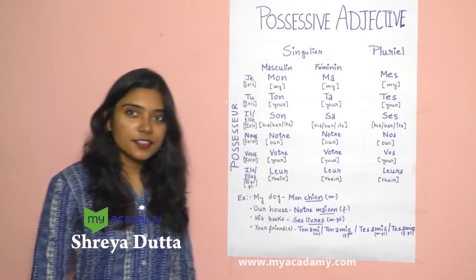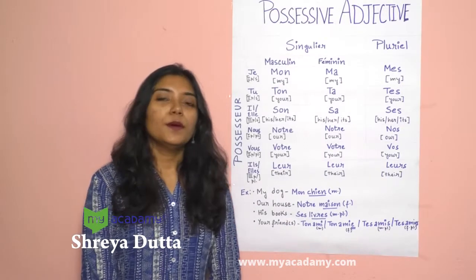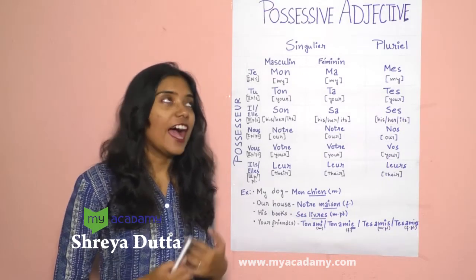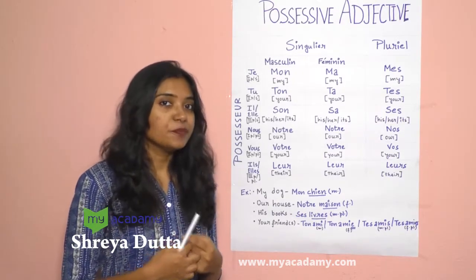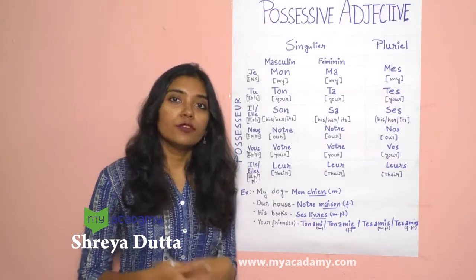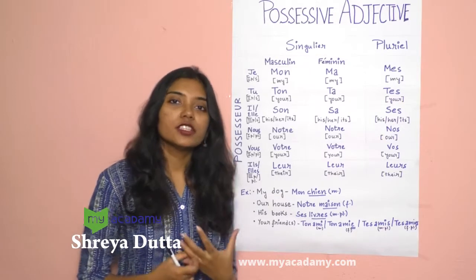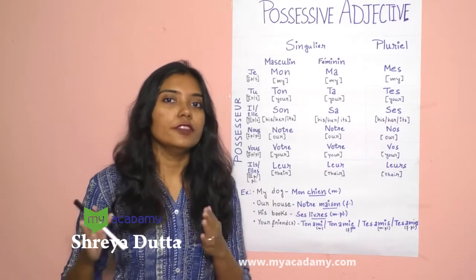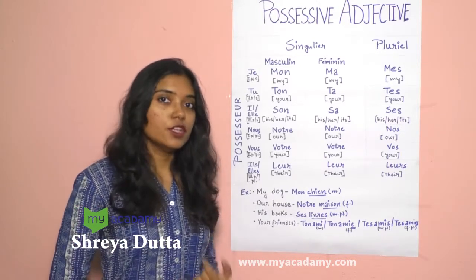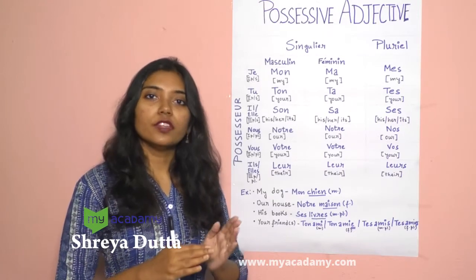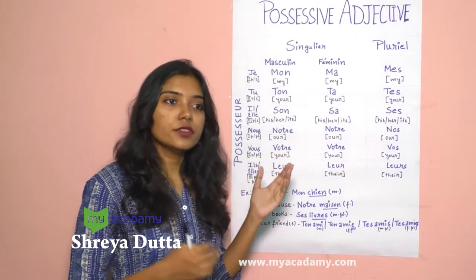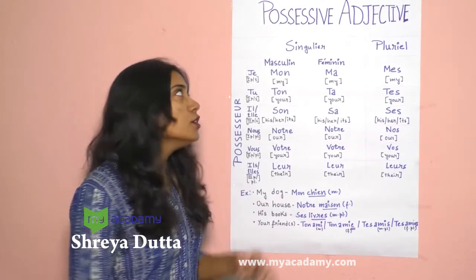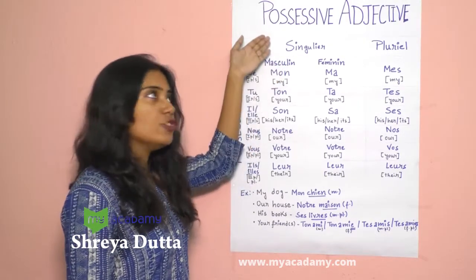Today we'll be learning the French possessive adjective, or adjective possessif en français. First of all, we have to know what an adjective is. An adjective is one of the parts of speech which defines the quality of a noun. And what is possessive? Possessive means that if we put this adjective in front of the noun, it will define to whom or what the noun belongs.